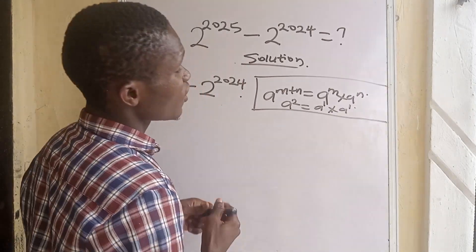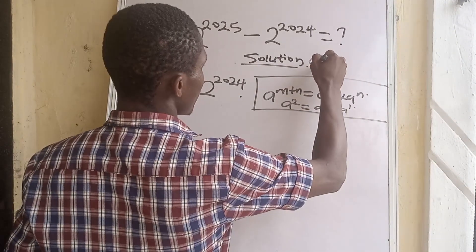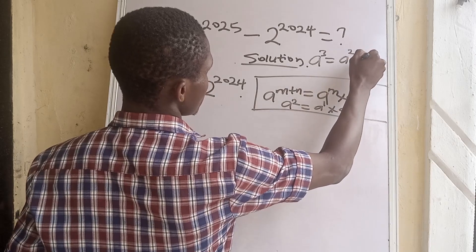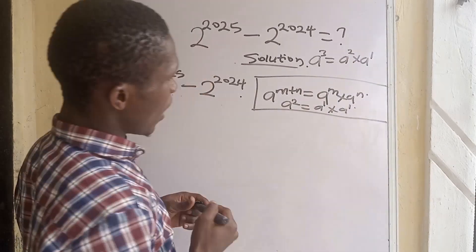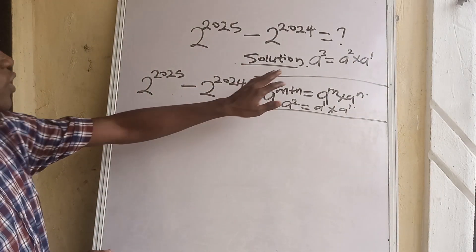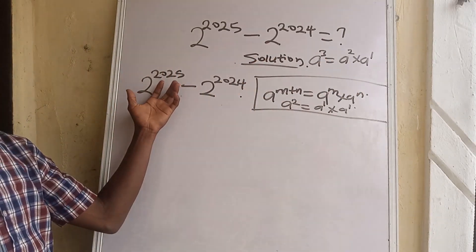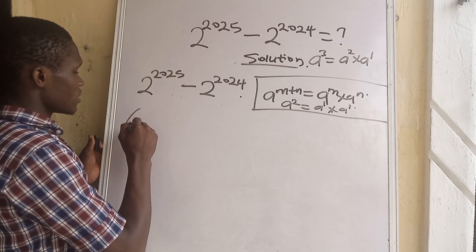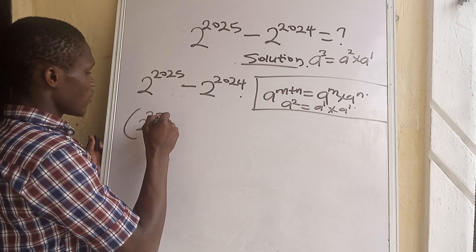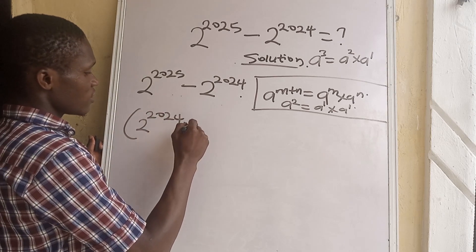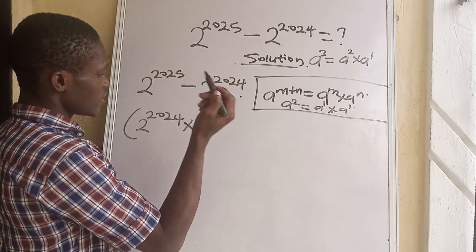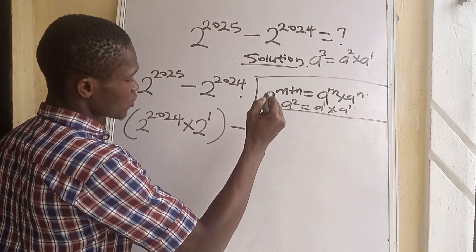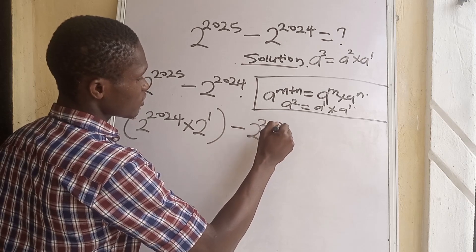We can simply write a to the power of 2 is also equal to a to the power of 2 times a to the power of 1. At this point we are going to apply this principle, so we are going to have open bracket 2 to the power of 2024 times 2 to the power of 1 close bracket minus 2 to the power of 2024.